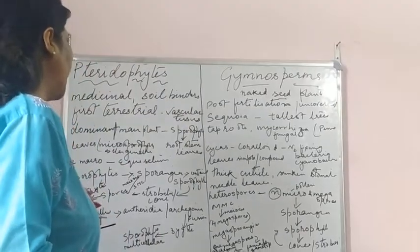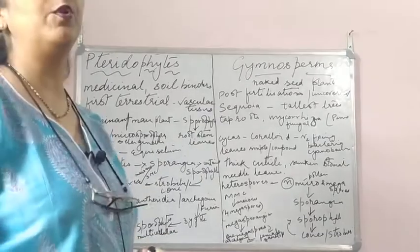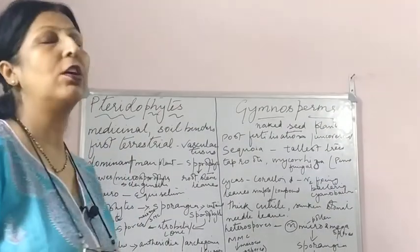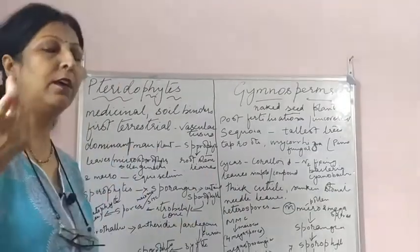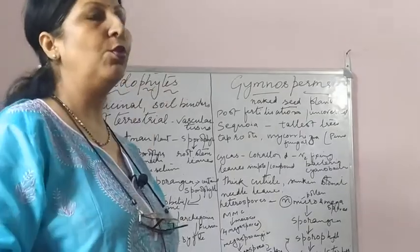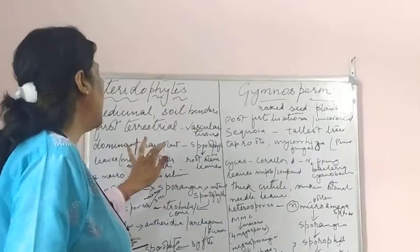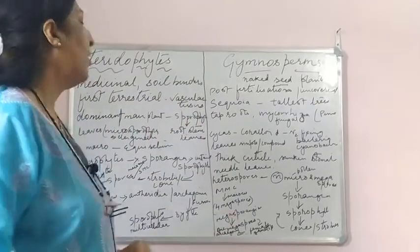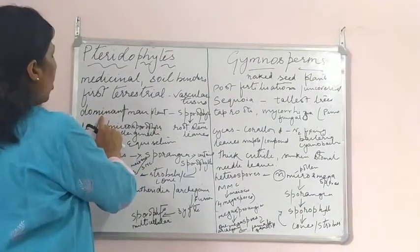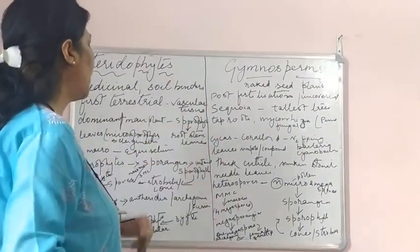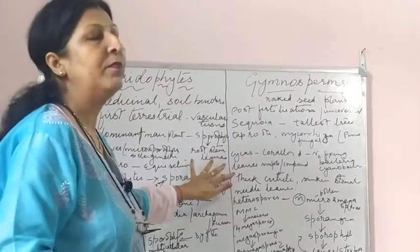They are the first terrestrial plants with vascular tissues. An important point - the dominant main plant body: if you remember when we were talking about bryophytes, we talked about sporophytic and gametophytic generations. In pteridophytes the dominant main plant is the sporophyte, while in bryophytes it was the gametophyte.